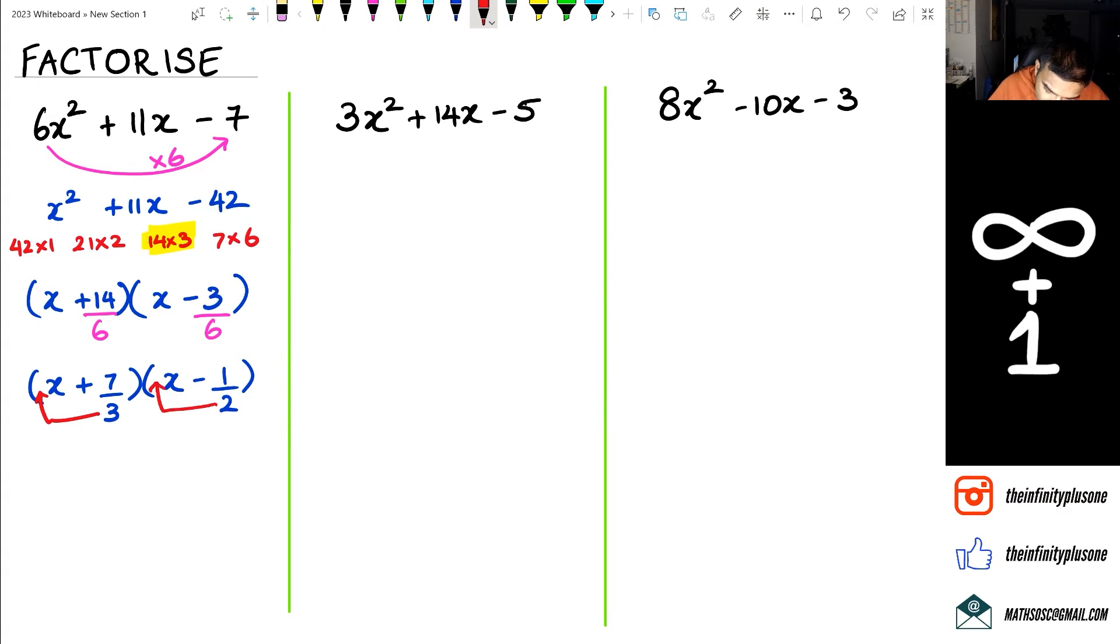So basically what we have is the two factors are 3x plus 7 and 2x minus 1.